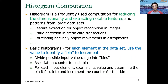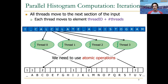The second parallel pattern we covered was histogram calculation, a frequently used computation for reducing the dimensionality of a dataset and extracting notable features. In a histogram, we access elements in the input, check the value, and increment the corresponding counter. In the parallel implementation, we must be careful because threads running concurrently may want to update the same bin of the histogram at the same time. To avoid data races and ensure correct results, we need to use atomic operations.